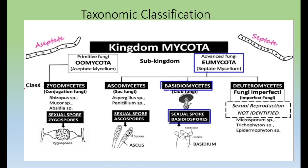Within kingdom Mycota there are two sub-kingdoms: Phycomycota and Eumycota. Phycomycota contains the primitive fungi, which have aseptate mycelium. Eumycota contains the advanced fungi, which have septate mycelium.